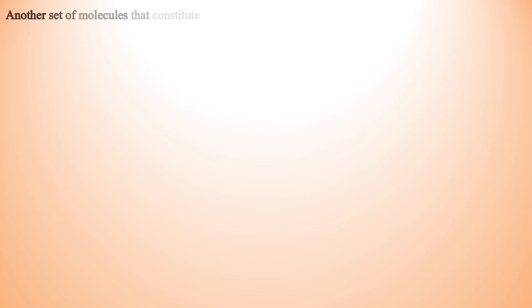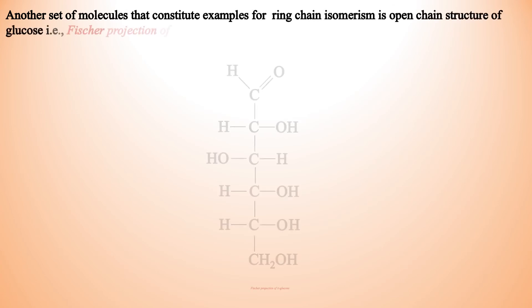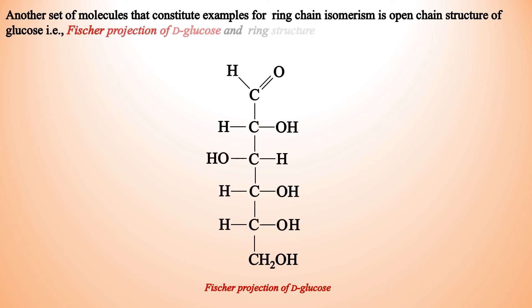Another set of molecules that constitute examples for ring chain isomerism is the open chain structure of glucose, that is, the Fischer projection of D-glucose, and the ring structure, that is, the Howarth projection of alpha-D-glucopyranose.